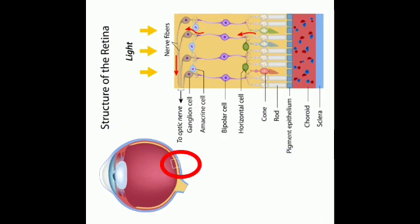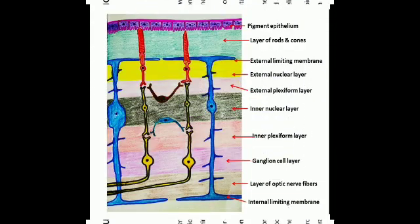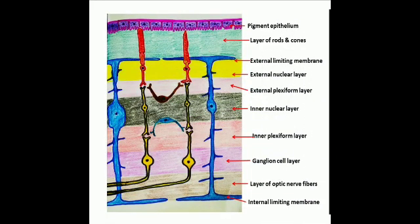Histologically, retina is made up of various types of cells and got several cellular layers. Let us learn these cellular layers from external aspect inwards.